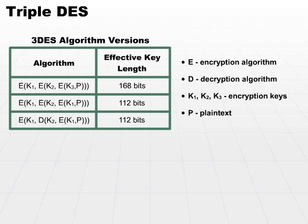The last version is a slightly different version in that it decrypts in between. It will encrypt with key one, then use key two to do a decryption — ending up not with plain text, but actually cipher text. Then it takes that output and encrypts it again with key one. Those are the three different ways that the Triple DES algorithm works, and your choice depends on the number of keys and the length that you can allow your keys to grow to.